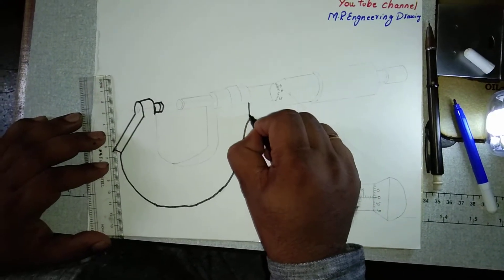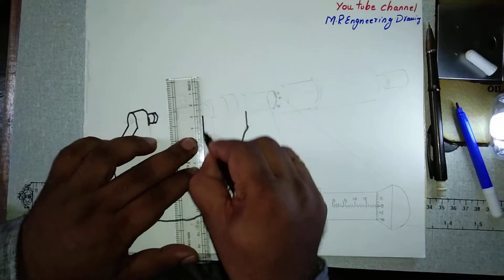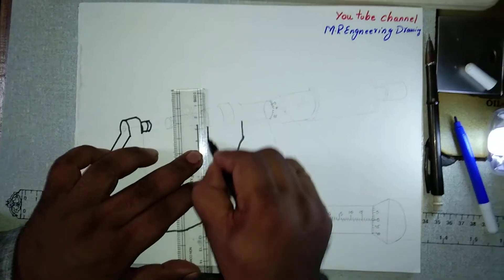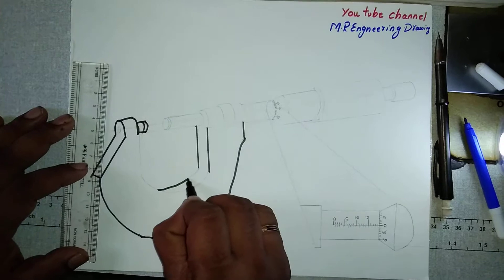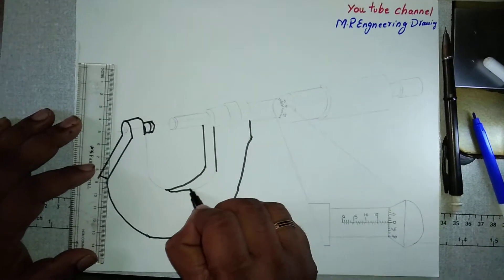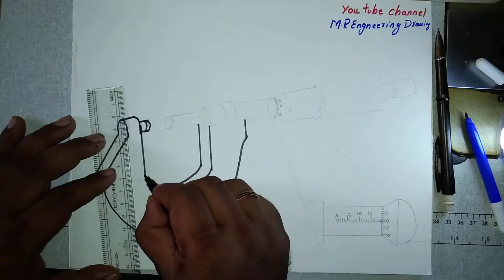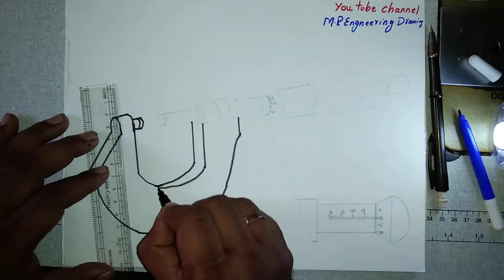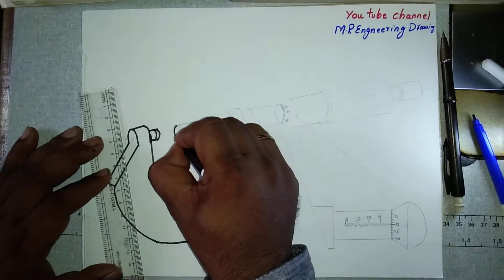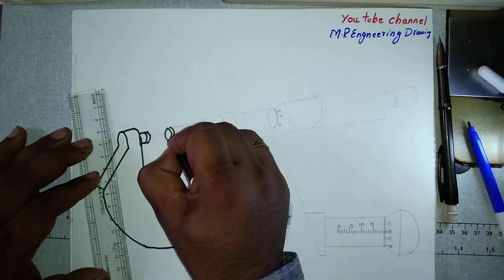It will come like a U because this is an outside micrometer. Watch the full video, then subscribe, put a like, share to your friends, and comment anything. If you have questions about the drawing, please ask me.